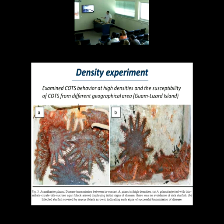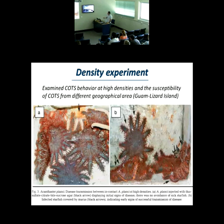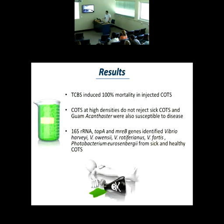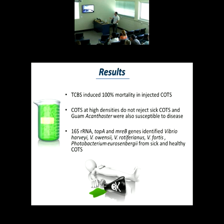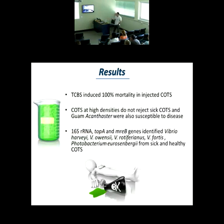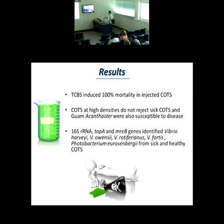These are Crown of Thorns starfish — you can see curled arms and a lot of mucus production. All these starfish died in 24 hours. We found that TCBS induced 100% mortality in injected Crown of Thorns, that Crown of Thorns at high densities do not reject diseased Crown of Thorns, and the disease was also successfully induced in Guam and Philippine Crown of Thorns populations.